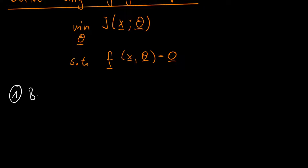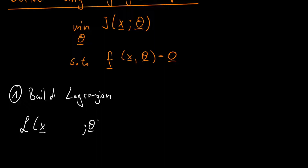The first step is to build the Lagrangian. We create an augmented loss function L, depending on x, optionally on theta, and additionally on a Lagrange multiplier lambda. I use lambda here because it will turn out to be the adjoint variable. We build it as L = j + lambda-transpose times f, performing a scalar product between lambda and f to incorporate the constraint.